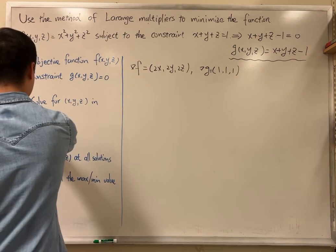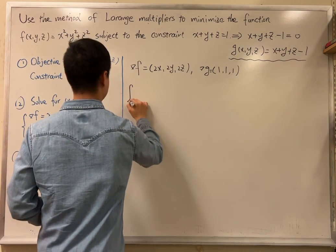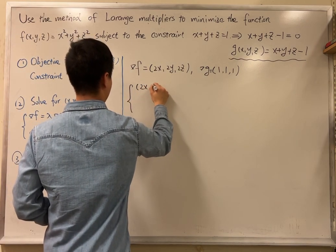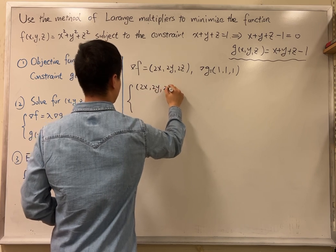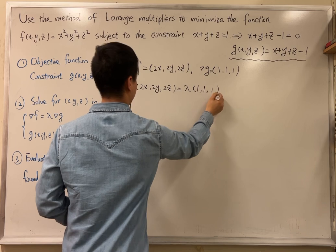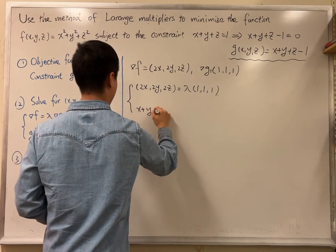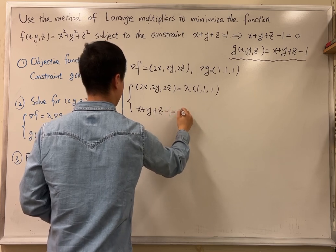Next, we're going to set gradient of f equals lambda gradient of g, so we will have 2x, 2y, 2z equal to lambda times 1, 1, 1, together with the constraint that we have, which is x plus y plus z minus 1 equal to 0.